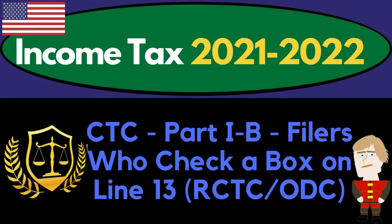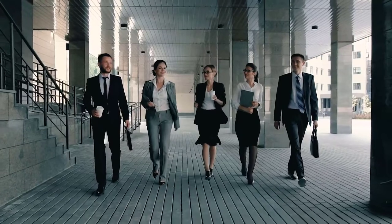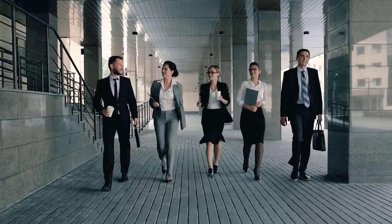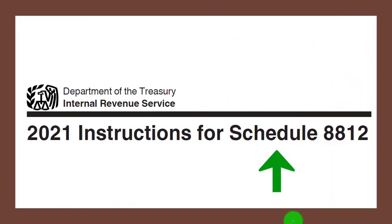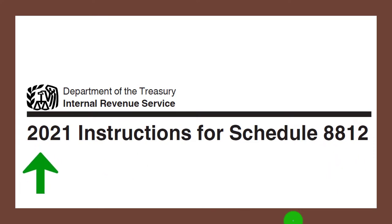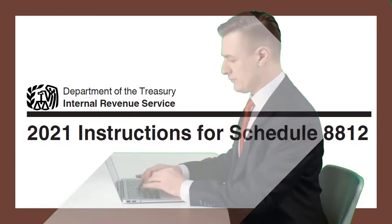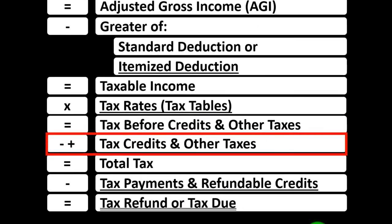Income Tax 2021-2022, Child Tax Credit Part 1B: Filers Who Check a Box on Line 13, Refundable Child Tax Credit, Other Dependent Credit. Get ready to get refunds to the max, diving into Income Tax 2021-2022. Most of this information can be found on the Schedule 8812 Instructions for 2021 Tax Year on the IRS website, IRS.gov.